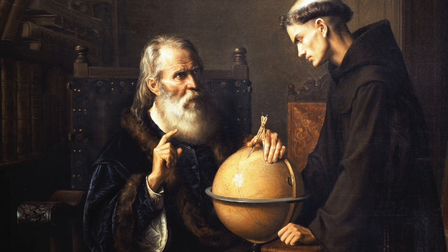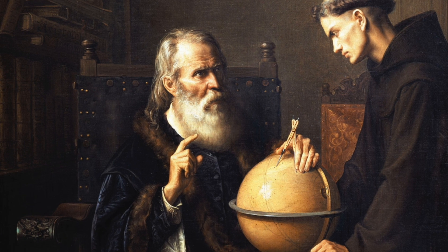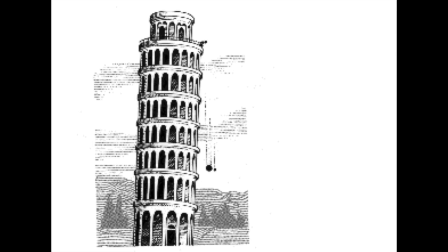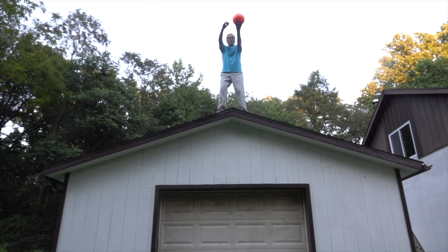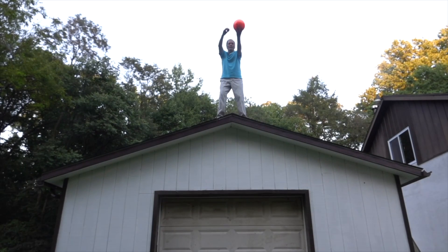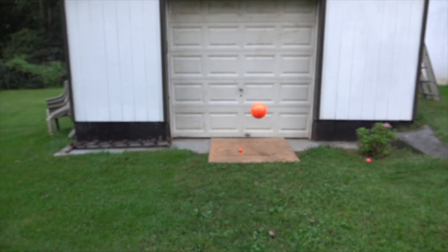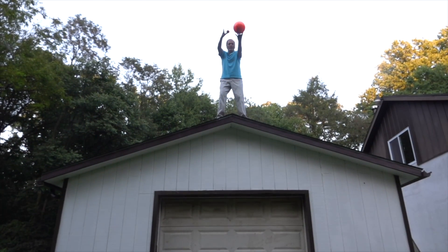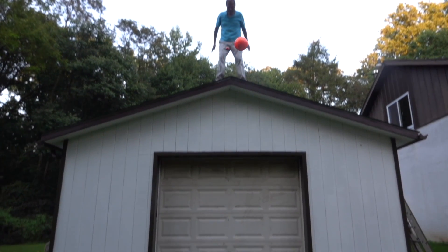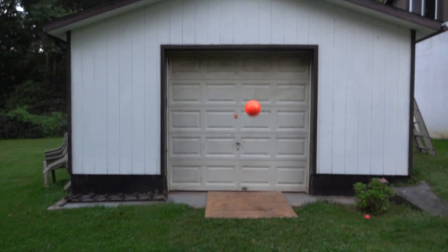It was Galileo that supposedly first demonstrated this concept by dropping light objects and heavy objects from the Leaning Tower of Pisa. He found them landing together. Here it is on a smaller scale. The larger ball is eight times more massive than the smaller one, so it has eight times more inertia, but it also has eight times more force pulling it towards the ground. So they fall together.